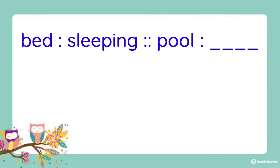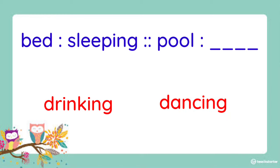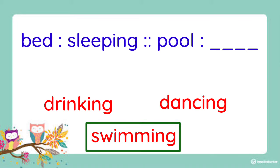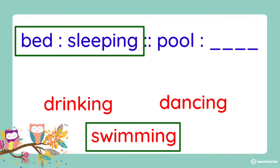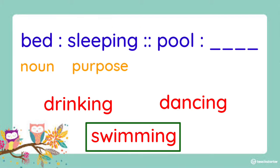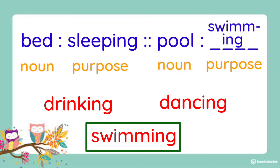Another one. Bed is to sleeping as pool is to blank. Is it drinking, dancing, or swimming? What do you think is the answer? It is swimming. Because if you look at the first two words — bed and sleeping — sleeping tells the purpose of the bed, or what the bed is for. So we have to find the word that tells the purpose of the pool. It is for swimming.